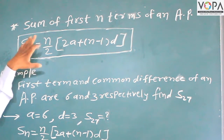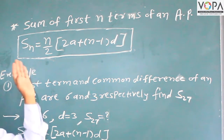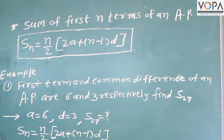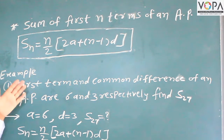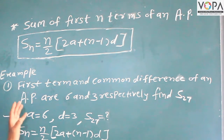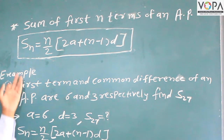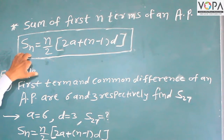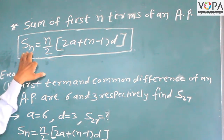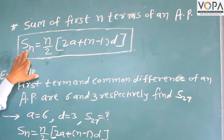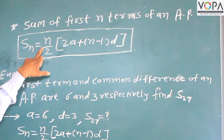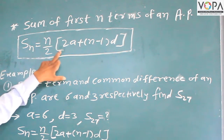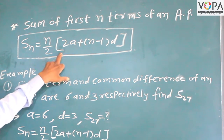The nth term formula is tn equal to a plus n minus 1 into d. This is the nth term. Now, the sum formula: Sn is equal to n upon 2, multiplied by 2a plus n minus 1 into d.